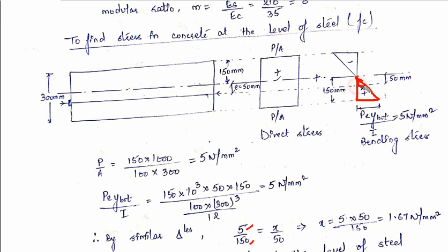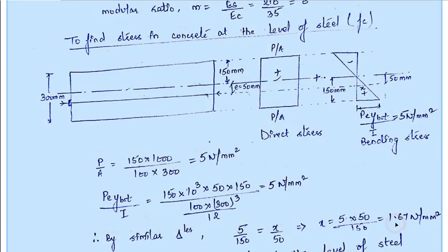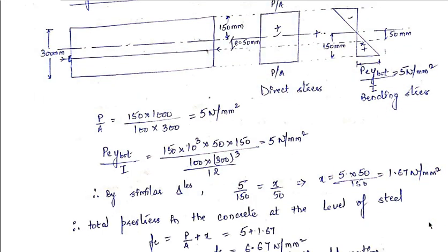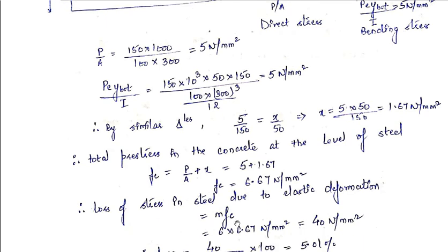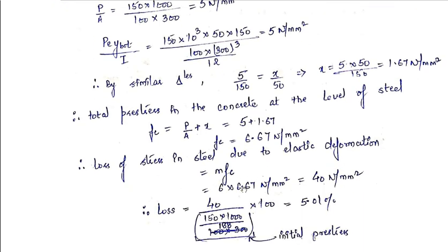Using similar triangle properties: (5 N/mm²) × 50 / 150 = x / 50, solving gives x = 1.67 N/mm². Therefore, the total stress in concrete at the level of steel is P/A + x = 5 + 1.67 = 6.67 N/mm². The loss of stress in steel due to elastic deformation is m × fc = 6 × 6.67 = 40 N/mm².